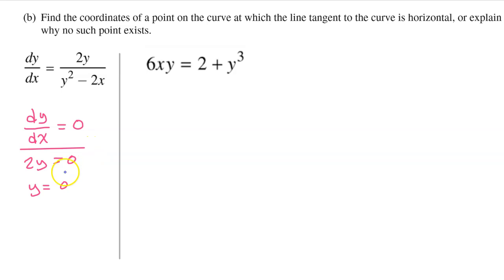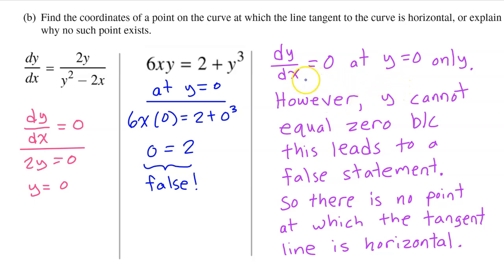To find the x coordinate, we need to substitute this y value back into the original equation. So we write, at y equals 0, always label your work like this, we have 0 equals 2, that doesn't make sense. So this is why there is no such point. So here's our explanation: dy/dx equals 0 at y equals 0 only. However, y cannot equal 0, because this leads to a false statement. So there is no point at which the tangent line is horizontal.